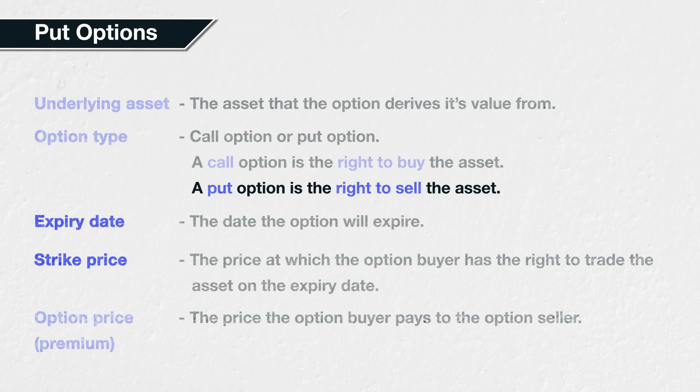Some traders who are brand new to options mistakenly believe that because they are betting on the underlying price going down, they must be executing a sell order. But with put options, this couldn't be further from the truth, as you need to buy a put option to benefit from a decrease in the underlying price. The buyer of the put option is purchasing the right to execute a sell order in the underlying asset at a later date.